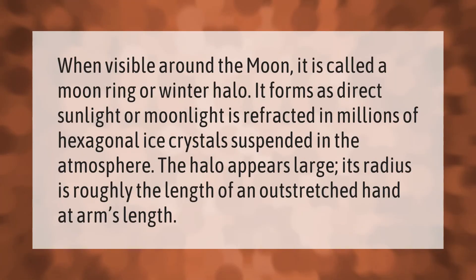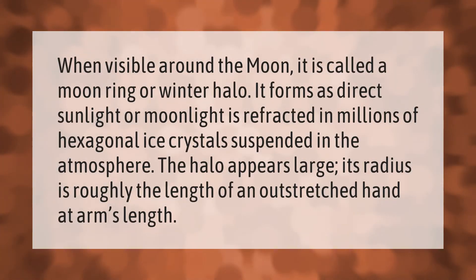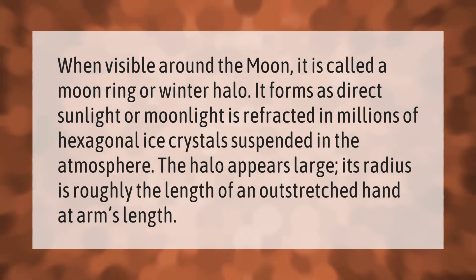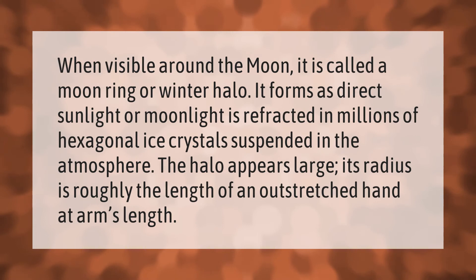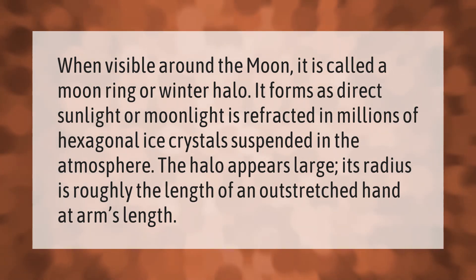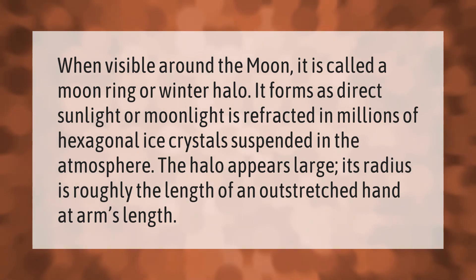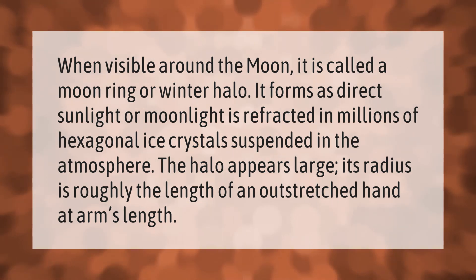When visible around the moon, it is called a moon ring or winter halo. It forms as direct sunlight or moonlight is refracted in millions of hexagonal ice crystals suspended in the atmosphere. The halo appears large — its radius is roughly the length of an outstretched hand at arm's length.